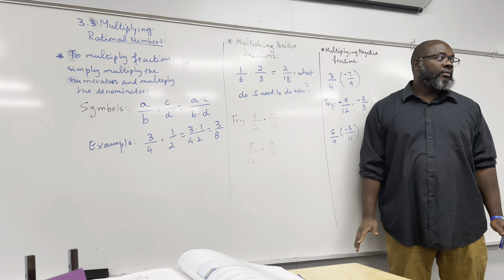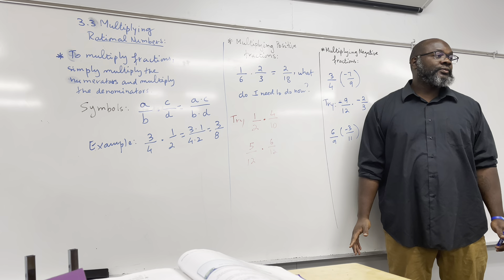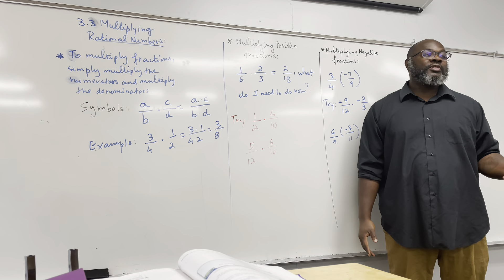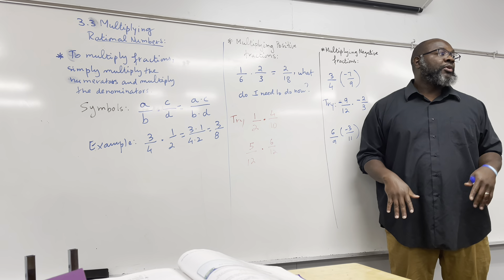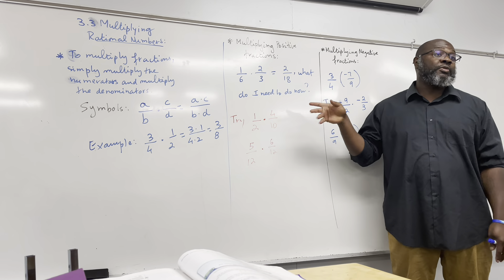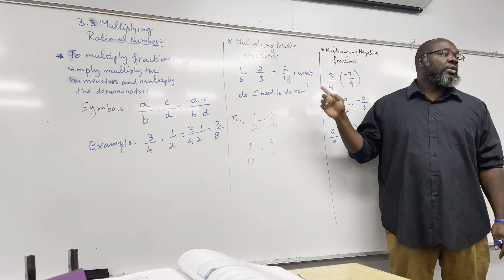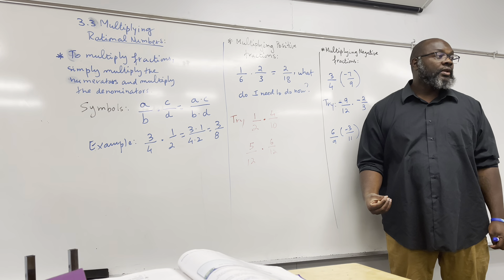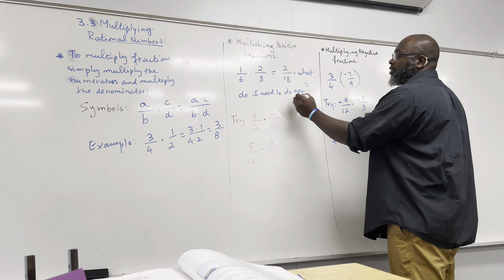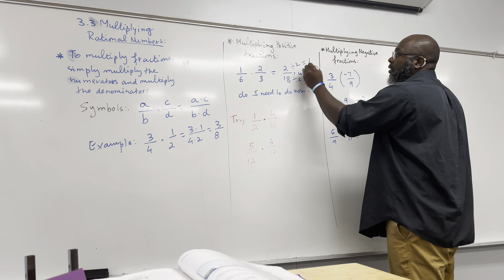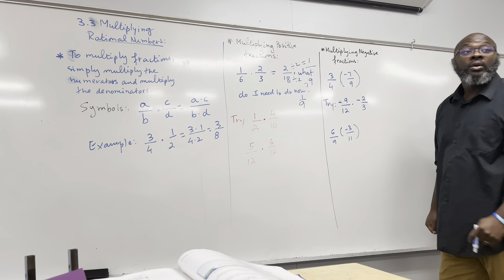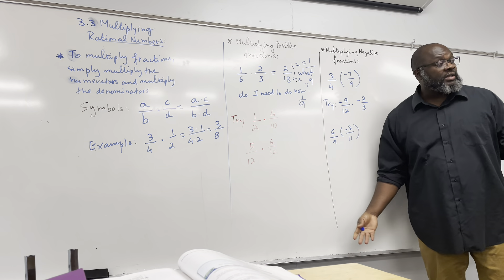We're talking about multiplying rational numbers — basically multiplying fractions. How do you multiply fractions? It's pretty simple. The only thing that gets complicated is when you have to simplify. To multiply fractions, you multiply the numerators together and the denominators together. So if you have a over b times c over d, it becomes a times c over b times d.